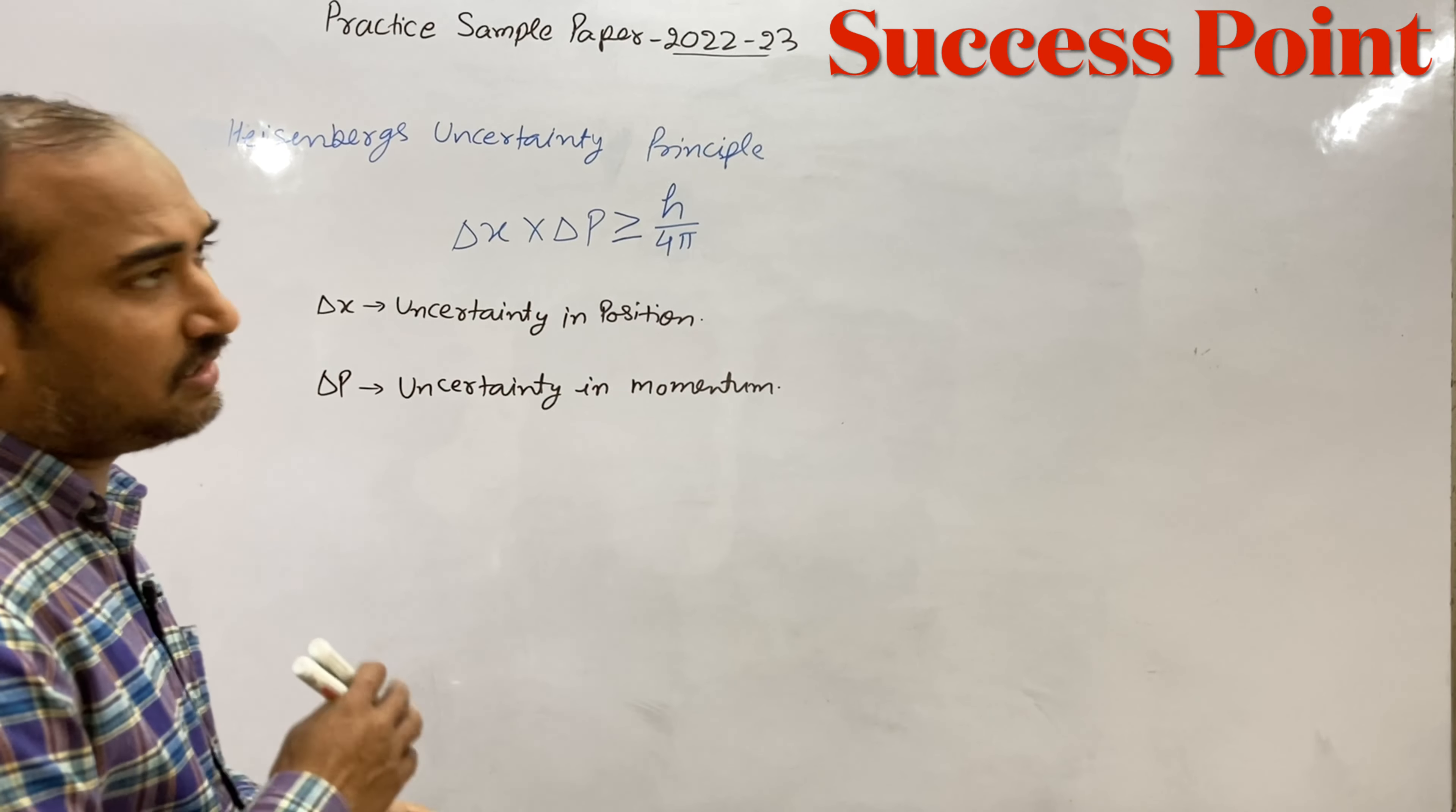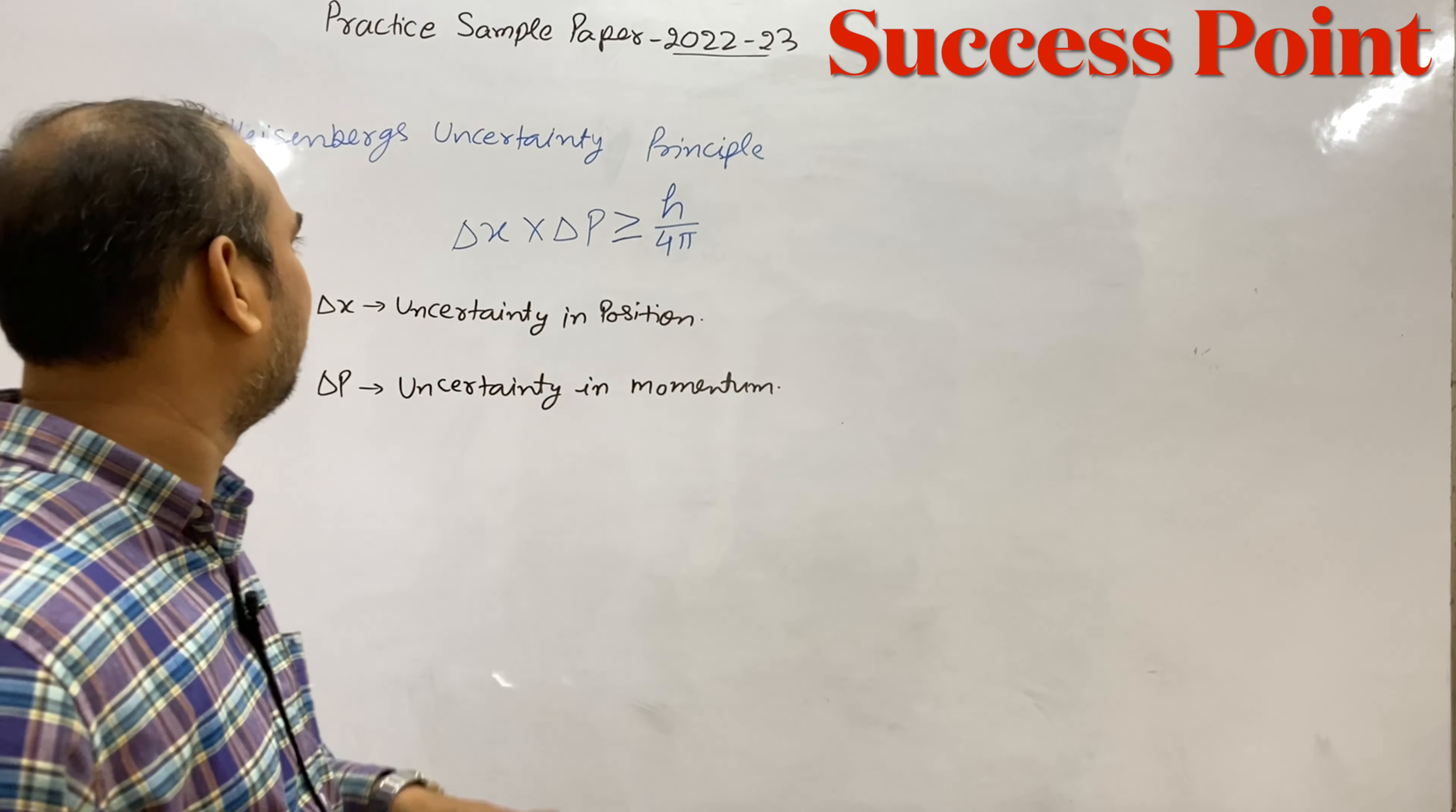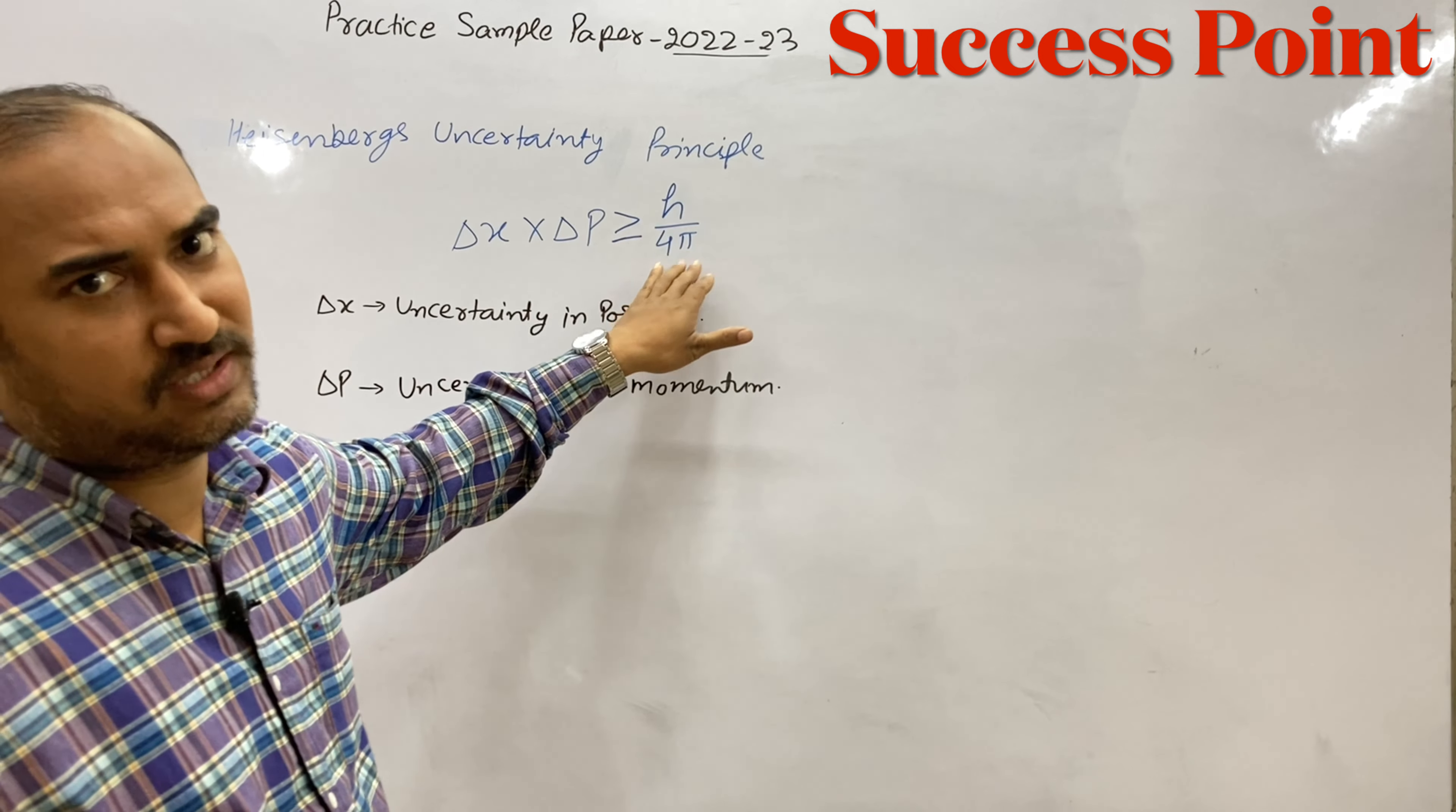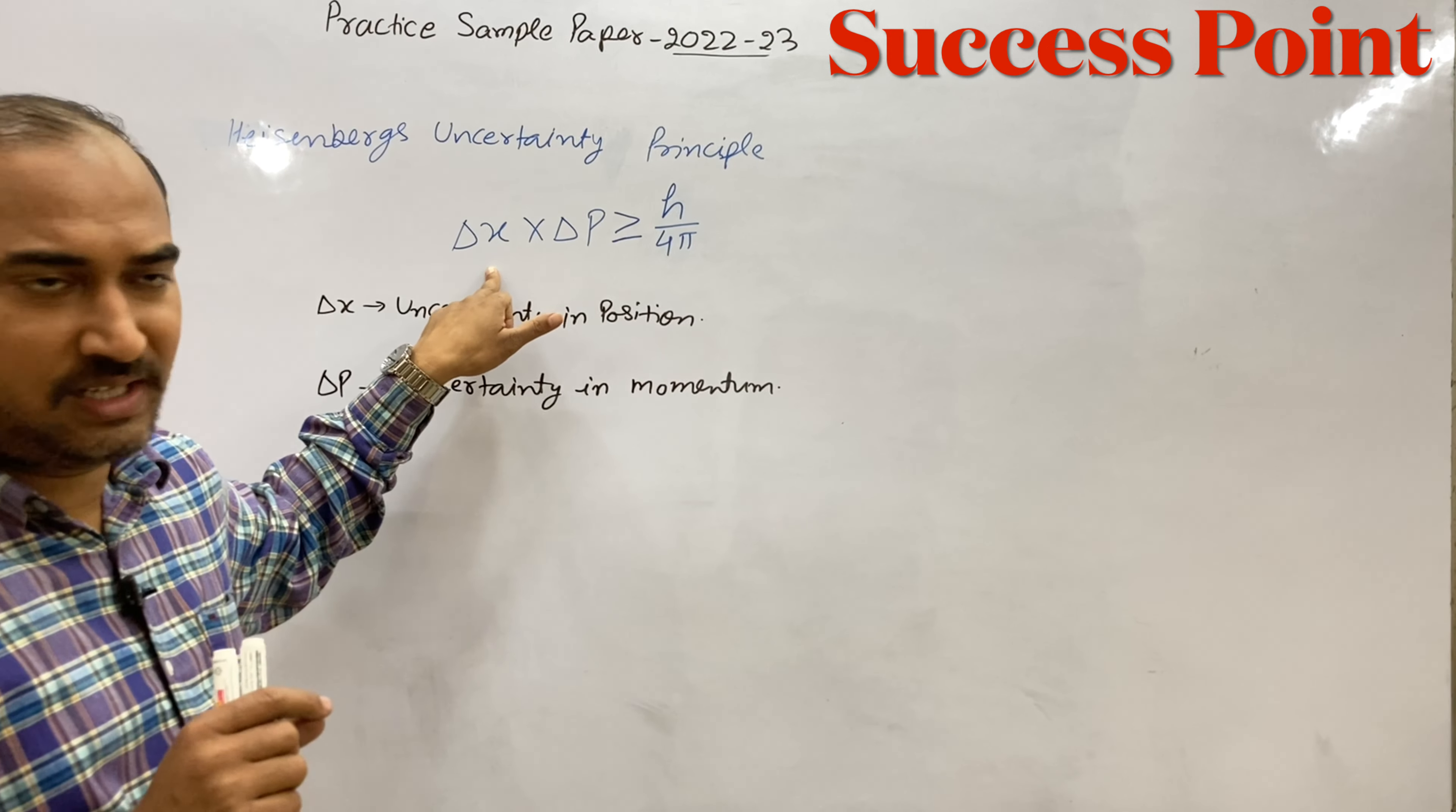This is a question on Heisenberg's Uncertainty Principle, which states that delta x times delta p is greater than or equal to h, where delta x is the uncertainty in position and delta p is the uncertainty in momentum.